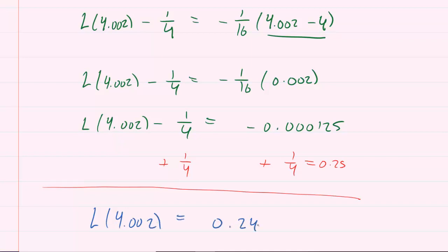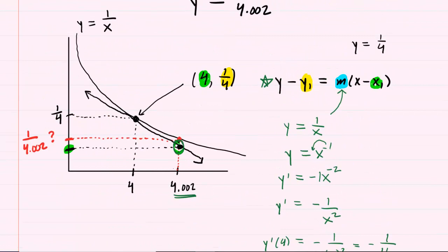You get .249875. So this value right here, if you go back up to the graph, that's the y-coordinate: 2, 4, 9, 8, 7, 5. That's the y-coordinate of this point, which lies on the tangent line.